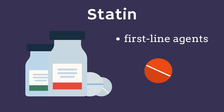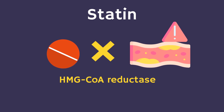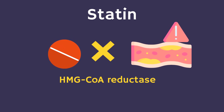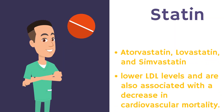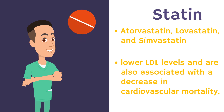Statins are considered the first-line agents, but other drugs can be substituted if the lipid targets are not achieved with statin therapy or if they are not tolerated. Statins work by competitively inhibiting the enzyme used in the biosynthesis of cholesterol, and they include agents such as atorvastatin, lovastatin, and simvastatin. These agents work to lower LDL levels and are also associated with a decrease in cardiovascular mortality and total deaths. However, they have a small effect on HDL cholesterol.